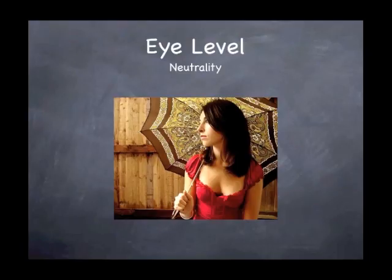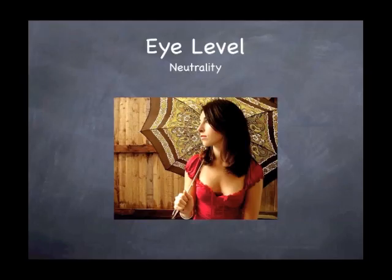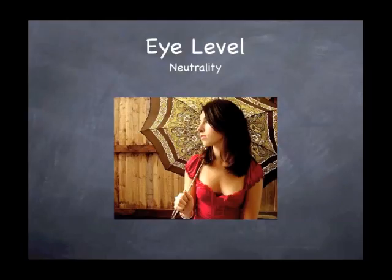Eye level is what we consider neutrality. Milos Forman, who directed One Flew Over the Cuckoo's Nest, always said if nothing's happening and it's a normal day, start the film shooting it neutral — straight on. When something happens, let the drama and characterization dictate what you do with your camera. Don't you dictate to it, because sometimes you'll go against it and it won't work.